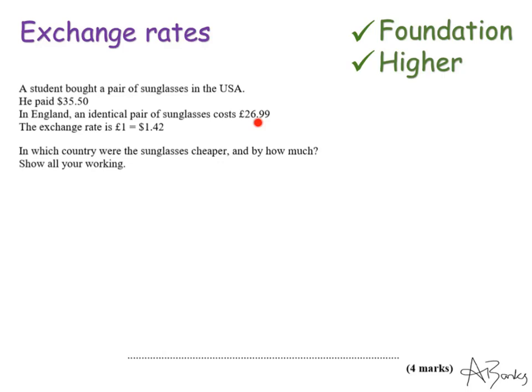Now because this is going from pounds to dollars I think it would be easier to change this from pounds to dollars but either way is fine and they don't ask me the question to do it in a certain currency they just say and by how much so they'll accept my answer in pounds or dollars. So I'm going to write out my exchange rate, I have that £1 is $1.42. So I'm going to change the £26.99, so £26.99 in dollars. Well to get from this side to this side I am multiplying by 1.42, so I'm going to multiply £26.99 by 1.42.